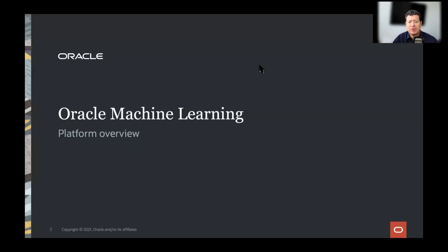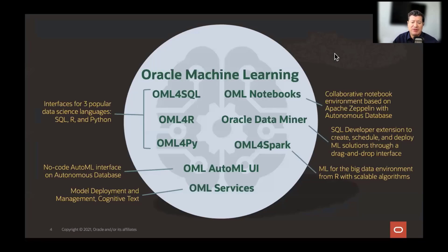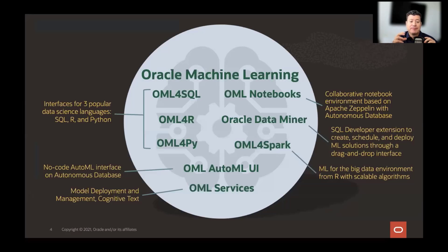So OML — these are the different components we have for Oracle Machine Learning. We have several ways to build models, different languages and different capabilities, different interfaces we can use, but also a no-code interface. Then we have model deployment using OML Services. We're going to focus more on deployment in this session.